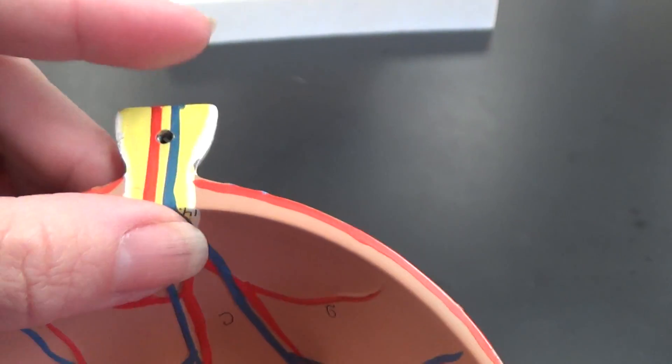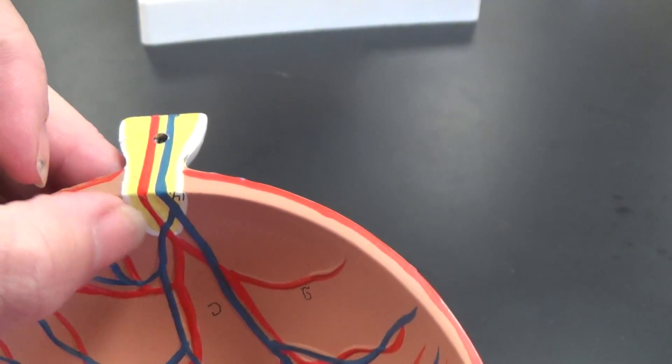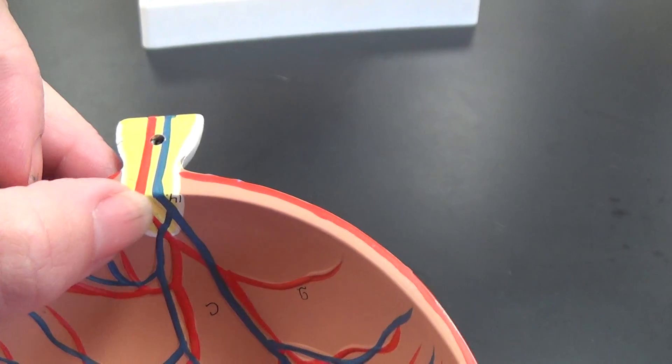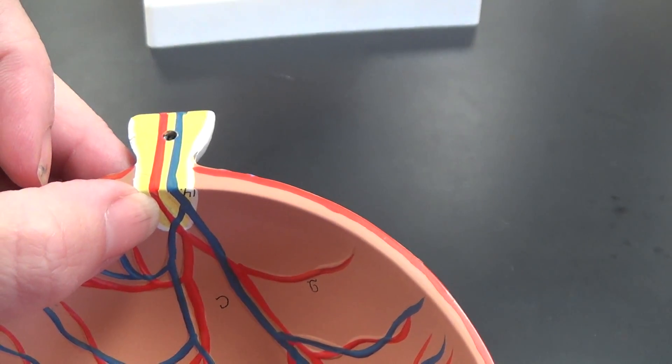Now in the front of the optic nerve, we have no photoreceptors here. So this is the optic disc, which is the blind spot for the eye.